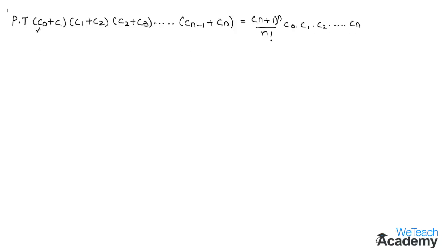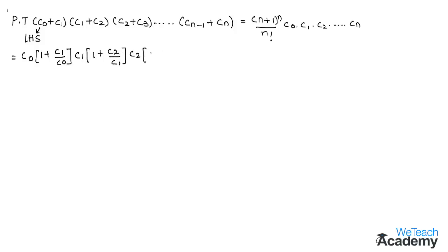First let us consider the LHS. Taking c0 as a common factor we get c0 into (1 + c1/c0). Taking c1 as a common factor we get c1 into (1 + c2/c1). Taking c2 as a common factor we get (1 + c3/c2), and so on.